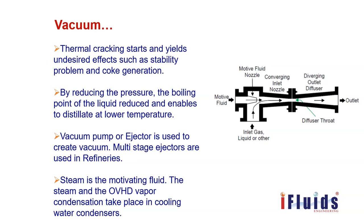So how will you create a vacuum? Thermal cracking starts and yields undesired effects such as stability problems and coke generation. By reducing the pressure, the boiling point of the liquid is reduced and it enables distillation at lower temperature. For this, a vacuum pump or ejector is used to create vacuum. Multi-stage ejectors are used in refineries. Steam is the motivating fluid. The steam and overhead vapor condensation takes place in cooling water condensers. Steam is injected at the motive fluid inlet, and gas is sucked from the vacuum distillation tower at the gas inlet.